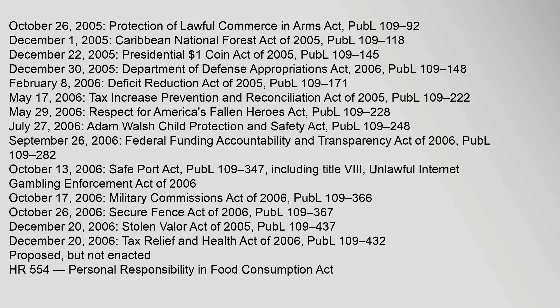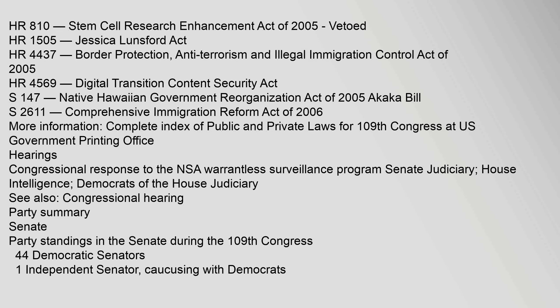Proposed but not enacted: H.R. 554, Personal Responsibility in Food Consumption Act. H.R. 810, Stem Cell Research Enhancement Act of 2005 (vetoed). H.R. 1505, Jessica Lunsford Act. H.R. 4437, Border Protection, Anti-Terrorism and Illegal Immigration Control Act of 2005. H.R. 4569, Digital Transition Content Security Act. S.147, Native Hawaiian Government Reorganization Act of 2005 (Akaka Bill). S.2611, Comprehensive Immigration Reform Act of 2006. More information: Complete Index of Public and Private Laws for the 109th Congress at the U.S. Government Printing Office. Hearings: Congressional response to the NSA Warrantless Surveillance Program — Senate Judiciary, House Intelligence, Democrats of the House Judiciary. See also: Congressional Hearing.